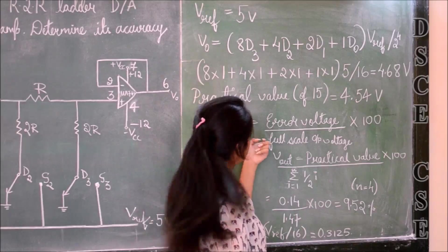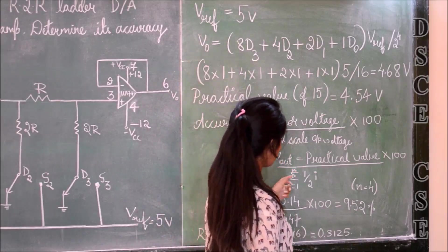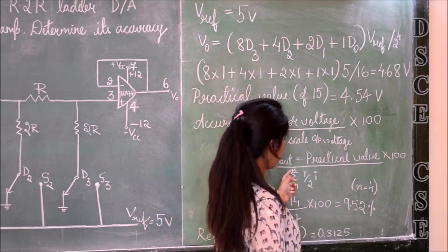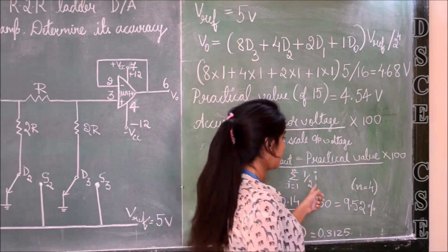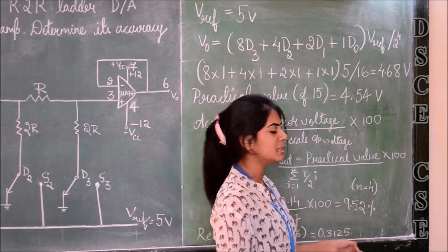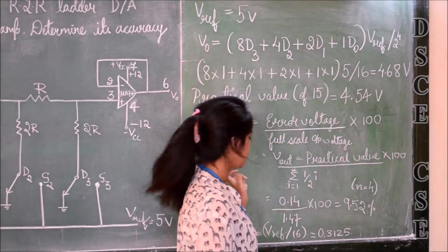The formula for full-scale output voltage equals summation i equals 1 to n, 1 by 2 to the power of i, where n equals 4 because we are using a 4-bit input.